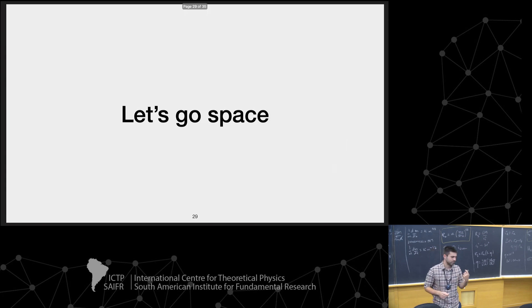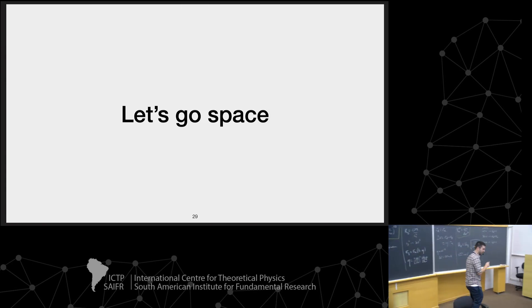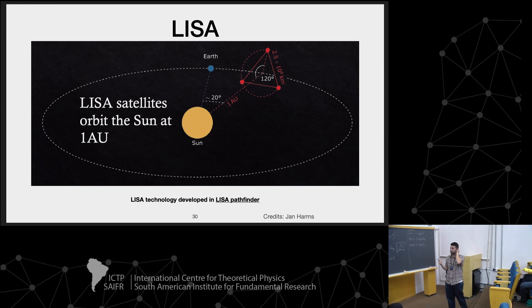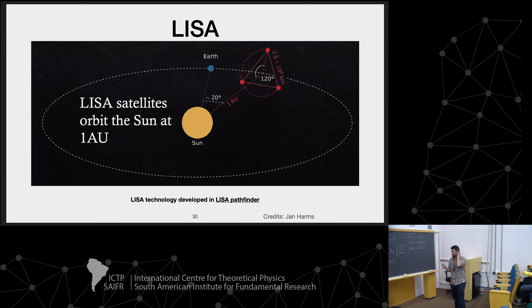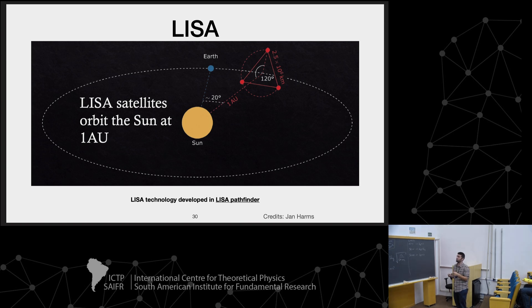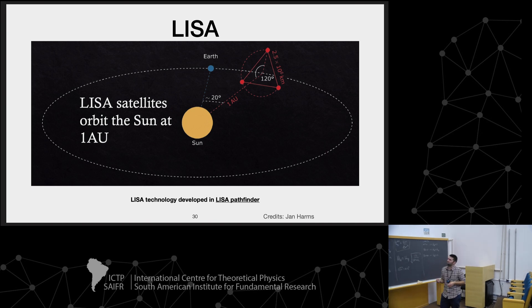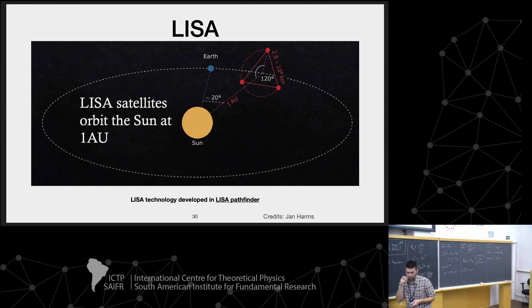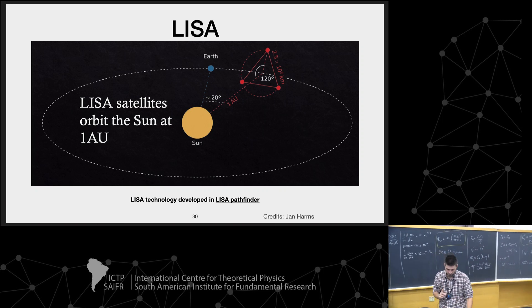That was ground-based detectors. The most promising gravitational wave detector mission in space is the LISA mission — a gigantic detector. It will have three probes at a distance of 2.5 million kilometers, orbiting the Sun at one astronomical unit. LISA Pathfinder was an earlier mission to test the technology of LISA — they were looking at the fact that you can actually measure the position of free-falling objects. In the LISA mission, these objects will be put 2.5 million kilometers apart with a laser going between the two probes.